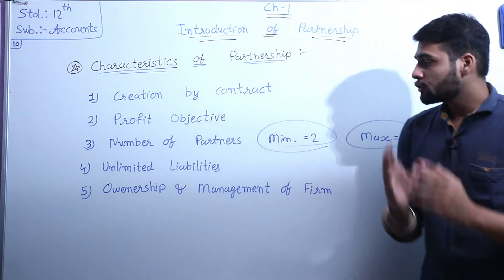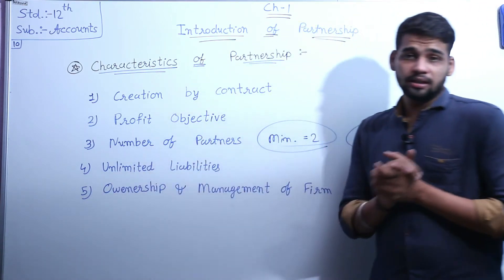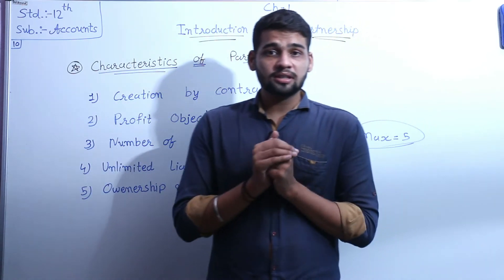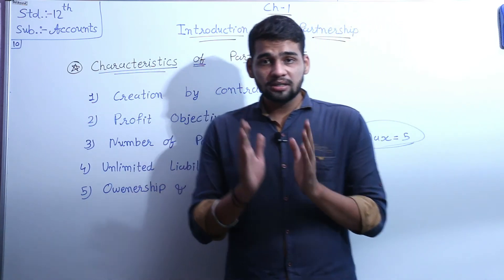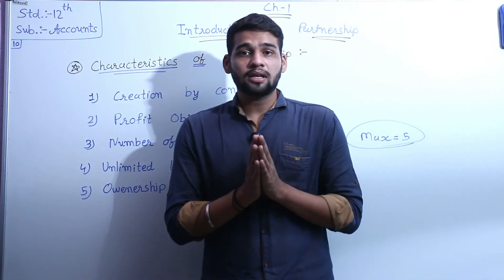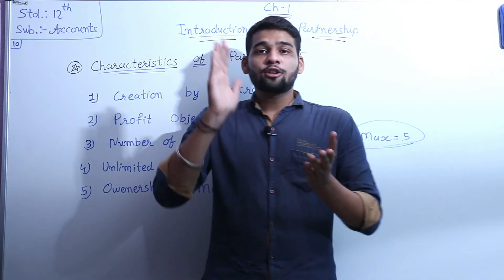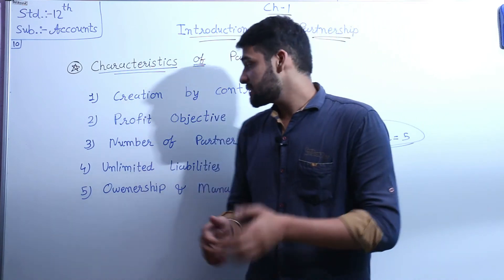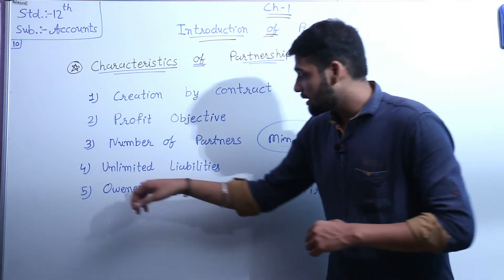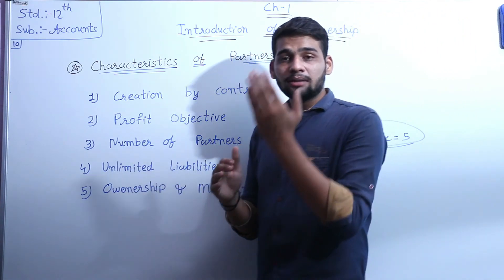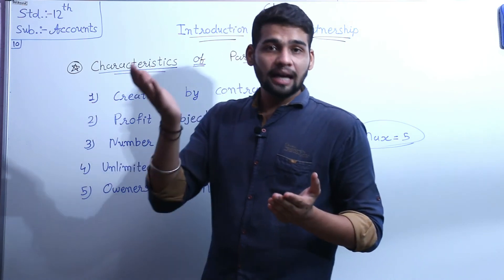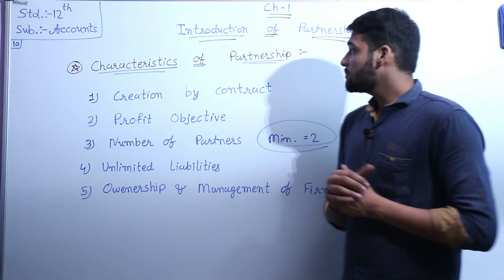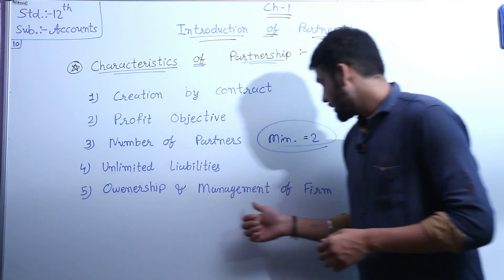The fourth characteristic of partnership is unlimited liabilities. Koi bhi partnership mein unlimited liabilities hoti hain. Suppose kisi bhi situation mein business ka dissolution karna hai, aur us time pe agar hamari assets kam hain aur liabilities zyada hain, toh each and every partner ki apni personal property bhi include karni hogi. So at that time partners provide their personal property for settlement.